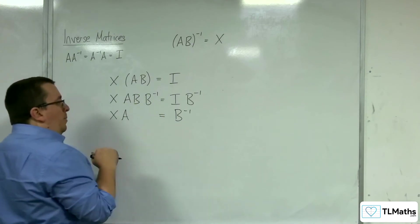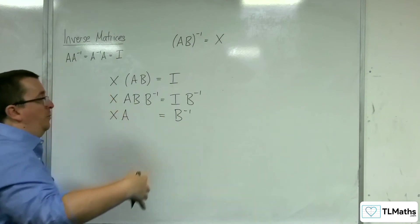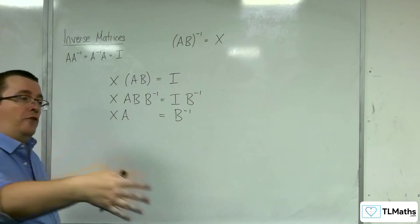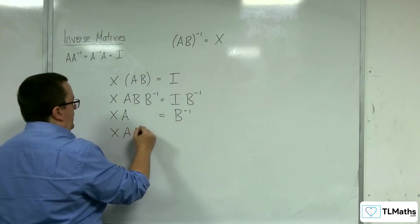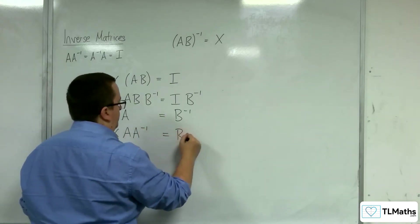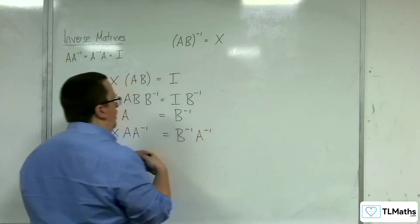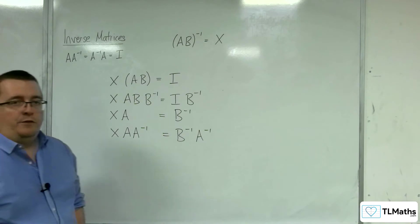I'm now going to apply, post-multiply, the inverse matrix of A as well. So let's do that. So I'm multiplying both sides by the inverse matrix for A.